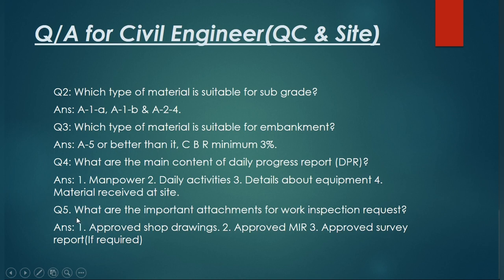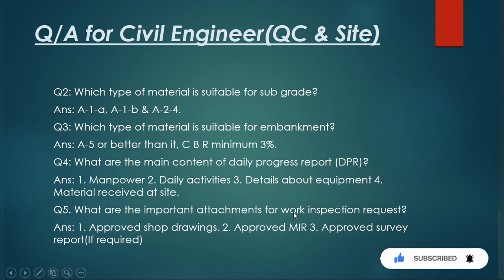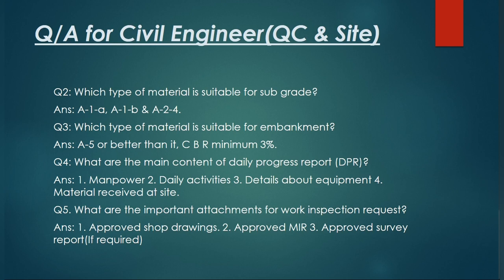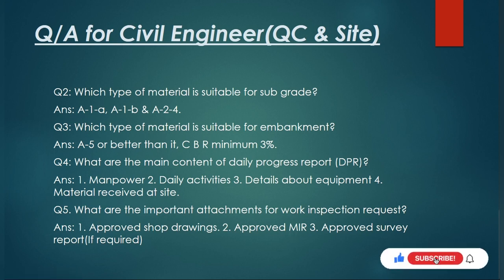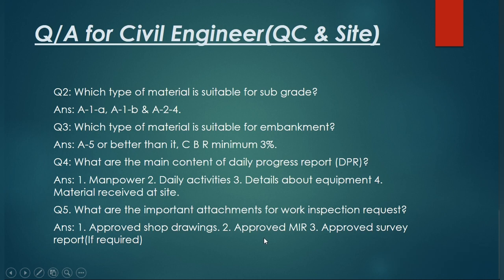Question number five: what are the important attachments for a work inspection request (WIR)? This is an important question for QC engineers and site engineers. First, you need to attach the approved shop drawing with highlighted location and structural details. Second, you need an approved MIR — material inspection request. If you are submitting a WIR for steel reinforcement, you must have checked the material at site beforehand and submitted the MIR. During WIR submission, you must attach the approved MIR.